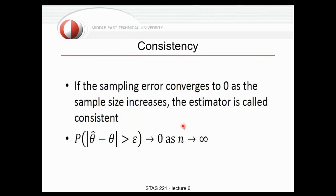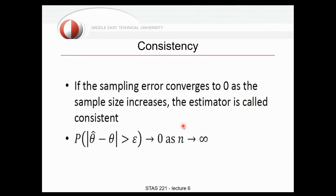We also have a term called consistency. It shows that if the sampling error converges to zero as the sample size increases — going to infinity or a very large value for n — then the estimator is called consistent. Formally, if the probability that the difference between the population parameter and sample statistic exceeds epsilon goes to zero as sample size grows very large, we say the estimator is consistent.